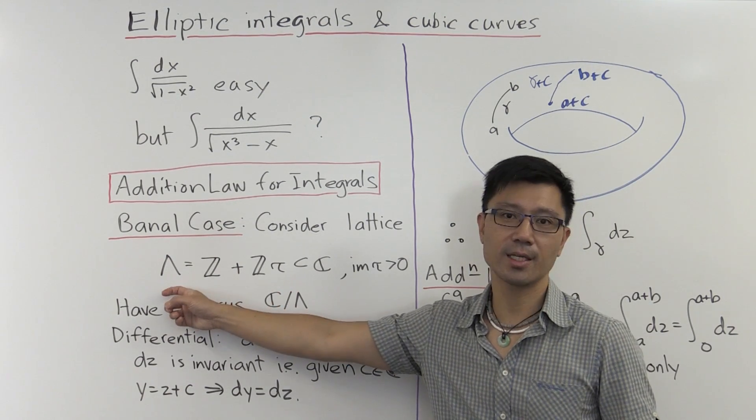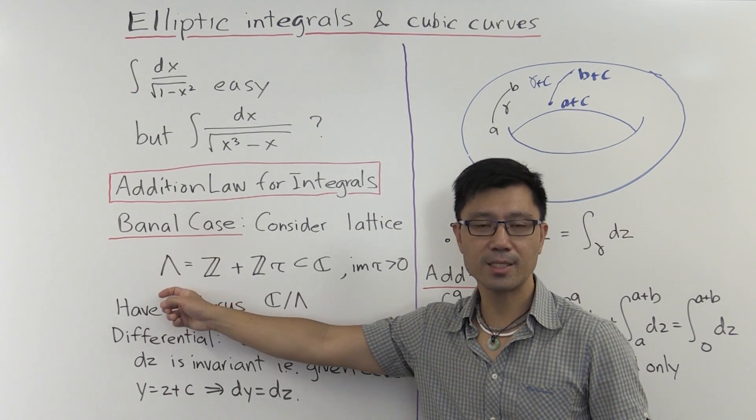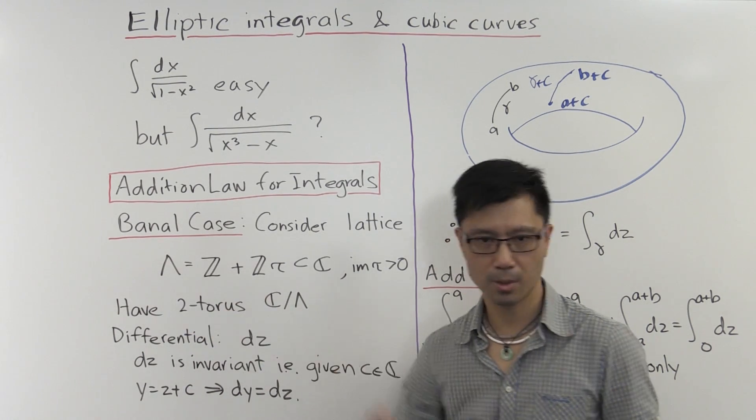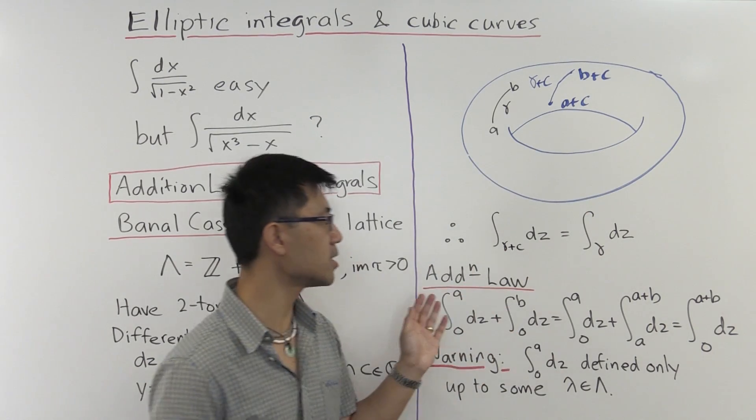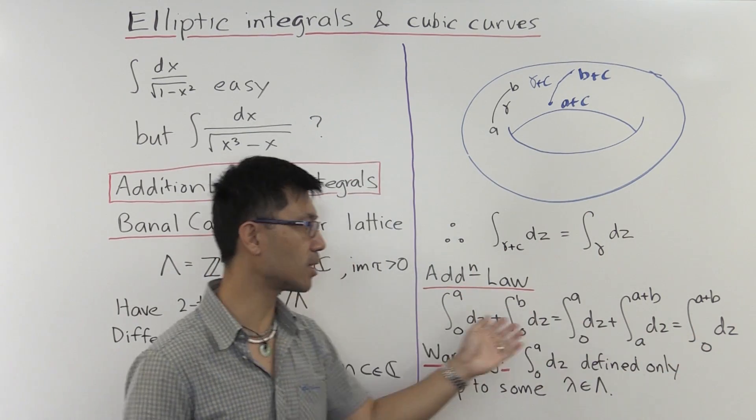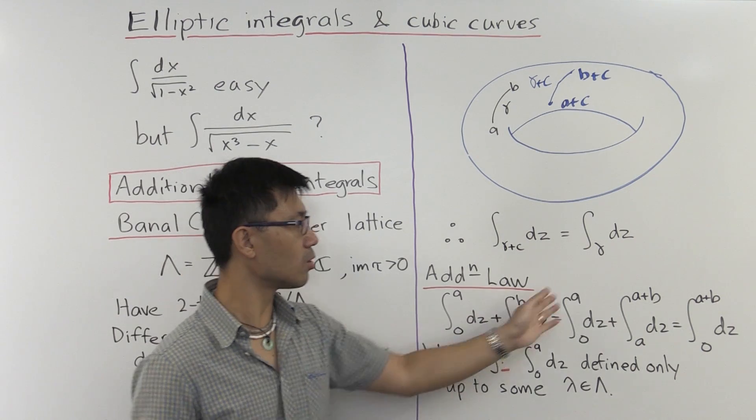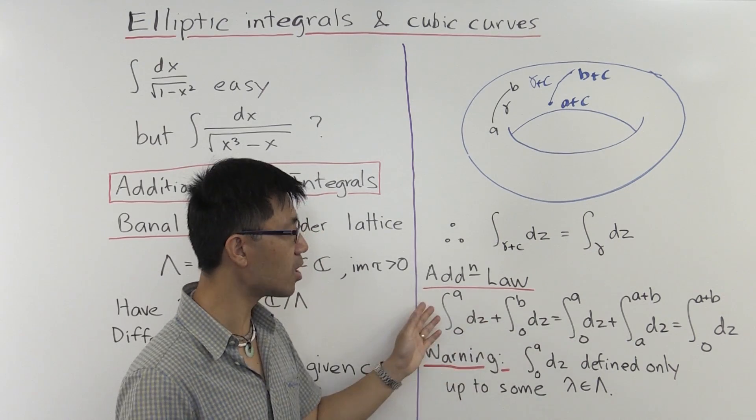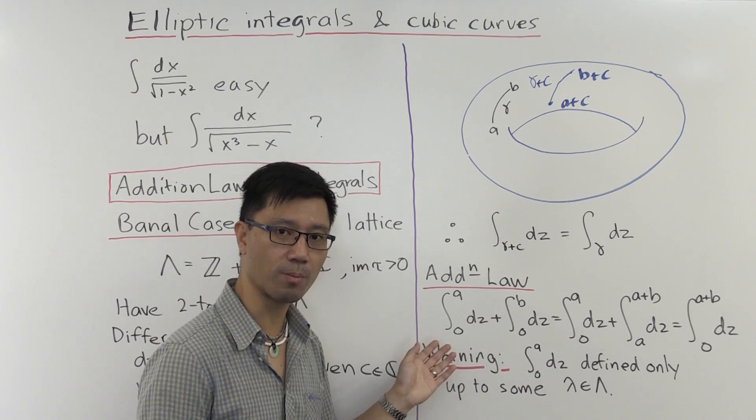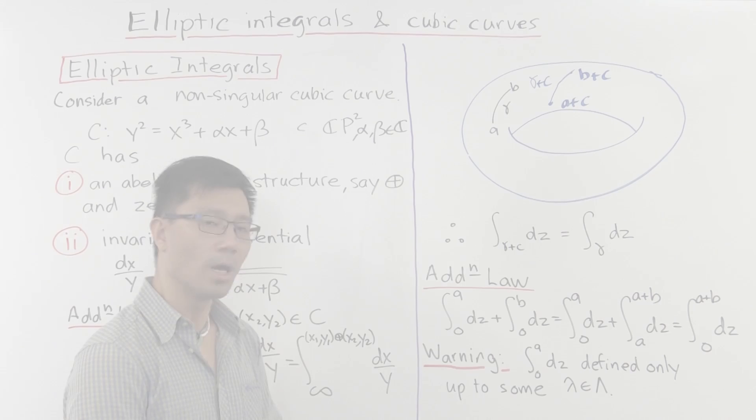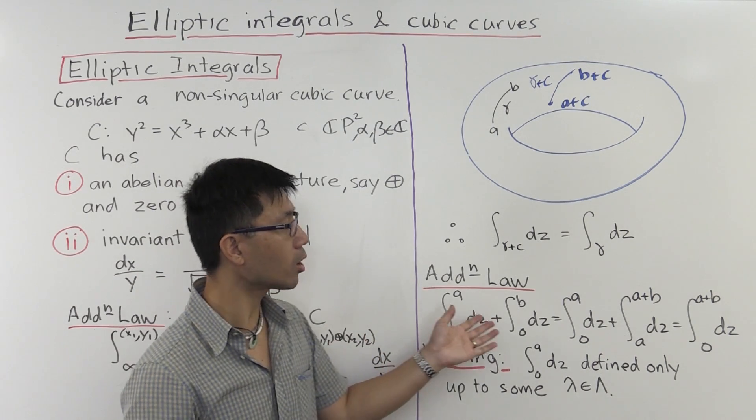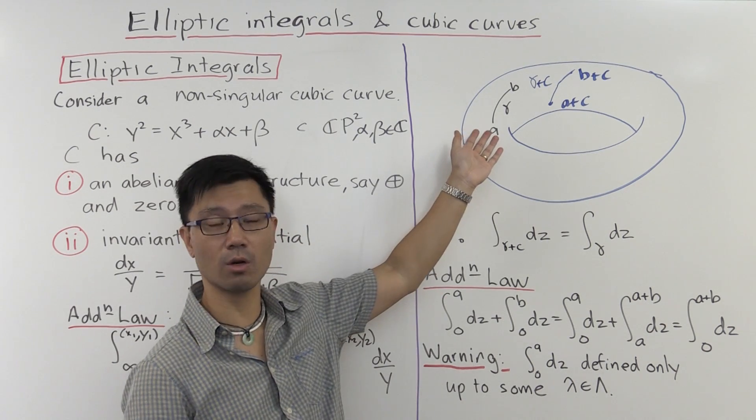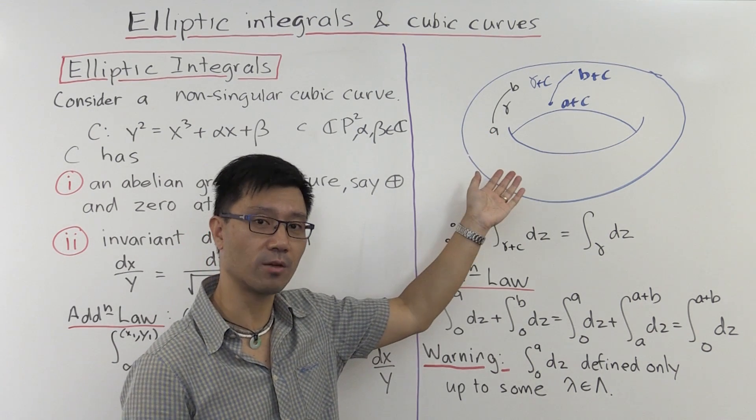They're the only possibilities. So really, to read this equation properly, how should you read this? These integrals, they're only defined modulo Λ. But at least you can certainly read this as an equation in the group C mod Λ. Now, to make this addition law work, what do we need in our argument? We need the group structure on the two torus, and also an invariant differential.